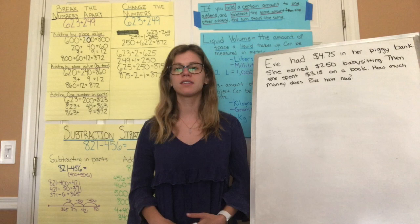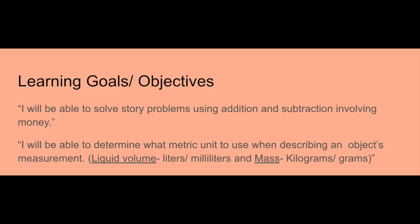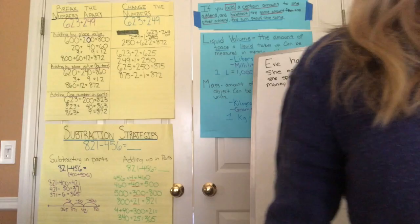Welcome back to day 37 of online learning. Today we're going over unit 7, lesson 3.6. Our learning goals for today are: I will be able to solve story problems using addition and subtraction involving money, and I will be able to determine what metric unit to use when describing an object's measurement. For liquid volume, that metric unit is liters and milliliters, and for mass, it is kilograms or grams.